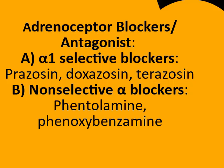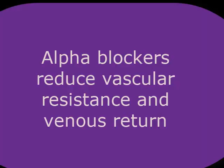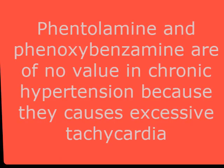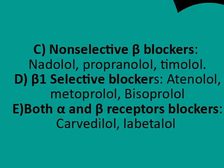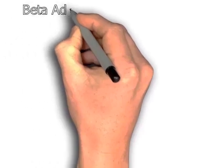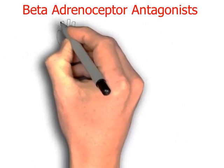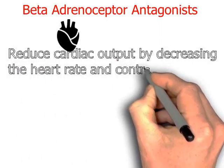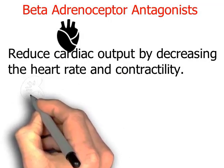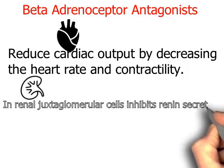Adrenoceptor blockers are further subdivided based on the receptor they block. Alpha-1 selective antagonists like prazosin, doxazosin, and terazosin are moderately effective antihypertensive drugs that reduce vascular resistance and venous return. The non-selective alpha blockers phentolamine and phenoxybenzamine are of no value in chronic hypertension because they cause excessive tachycardia. Beta blockers lower blood pressure by blocking beta-1 adrenoceptors in the heart, reducing cardiac output by decreasing heart rate and contractility.